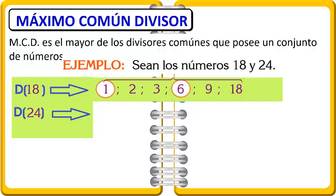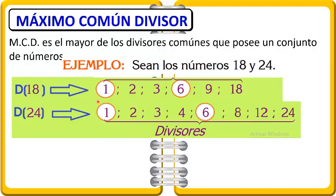Los divisores son aquellos números que dividen exactamente al número 18, y son aquellos números que están contenidos dentro del 18. Los divisores de 18 son: 1, 2, 3, 6, 9 y 18. Los divisores de 24 son: 1, 2, 3, 4, 6, 8, 12 y 24. ¿Qué divisor común tiene el 18 con el 24? El 1, el 2, el 3 y el 6.